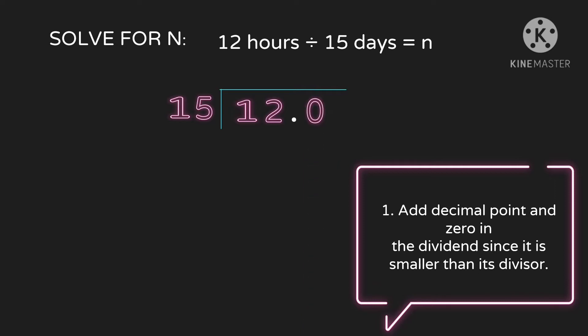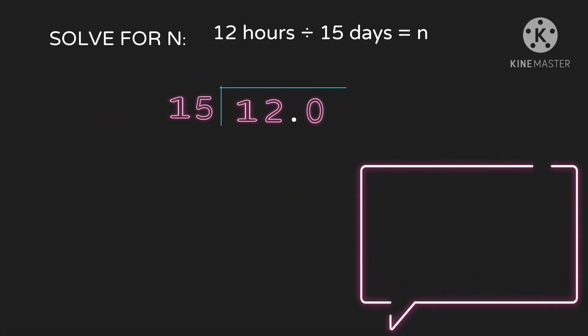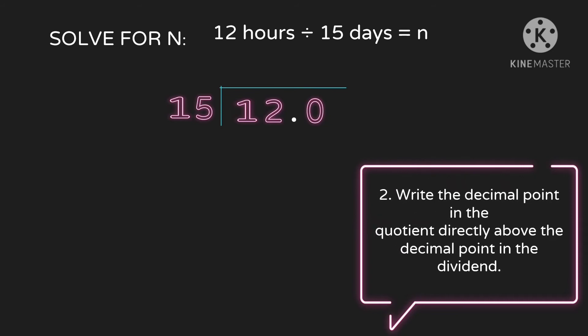So it becomes 12.0. Then next step, rewrite the decimal point in the quotient directly above the decimal point in the dividend. The decimal point is placed directly in the quotient. No need to move the decimal point because the divisor is already a whole number. We only move the decimal point when the divisor is a decimal number.